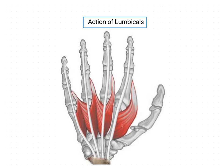Welcome back. In this session we are going to discuss the actions of lumbricals. The lumbricals are the only muscles in the body that attach the tendons of other muscles both proximally and distally. These four lumbricals arise from the tendons of the FDP, that is flexor digitorum profundus. Each muscle arises from the tendon of the FDP in the palm, which passes volarly to the transverse metacarpal ligament and attaches to the lateral band of the extensor mechanism.